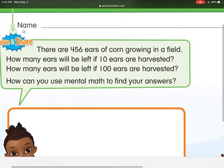So our friend here is saying that there are 456 ears of corn growing in a field. How many will be left if 10 ears are harvested? And how many will be left if 100 ears are harvested? And how can you use mental math to find your answers?